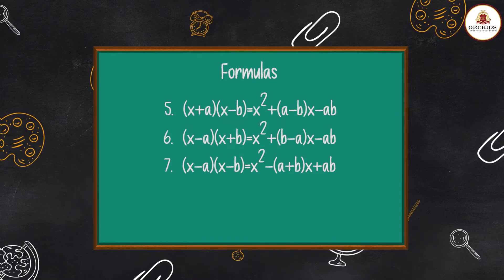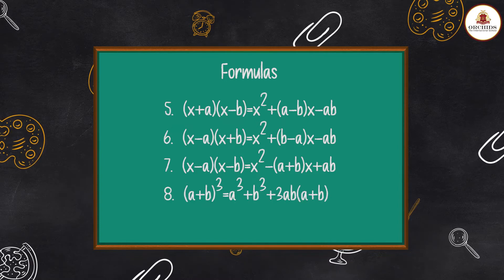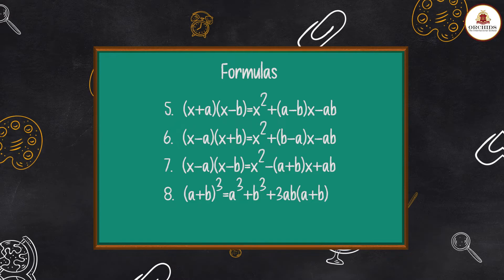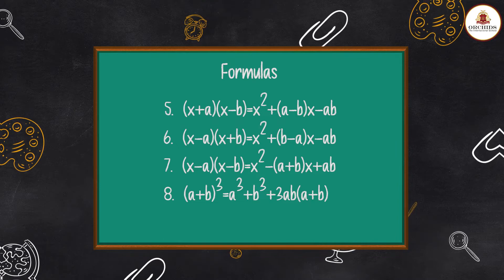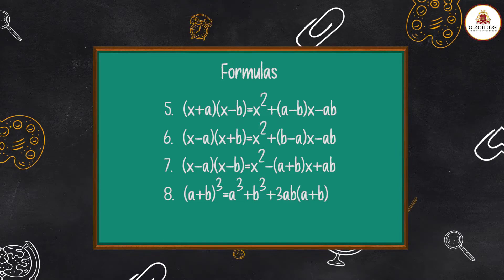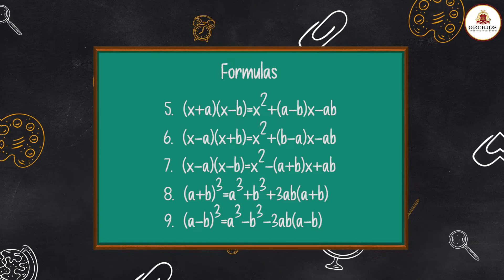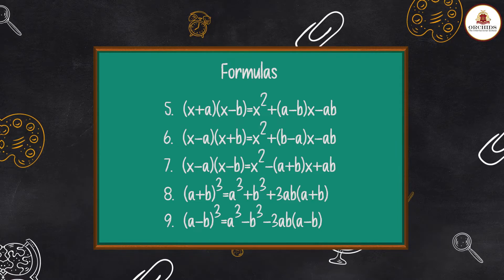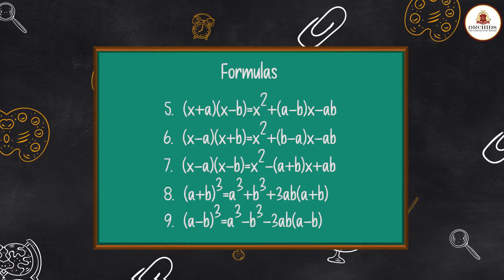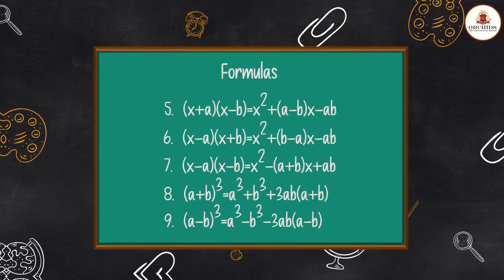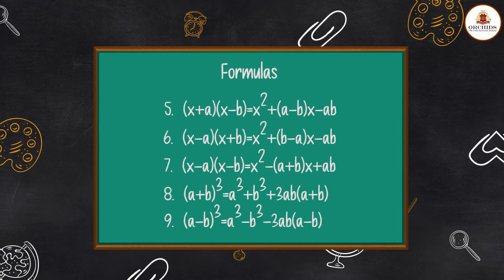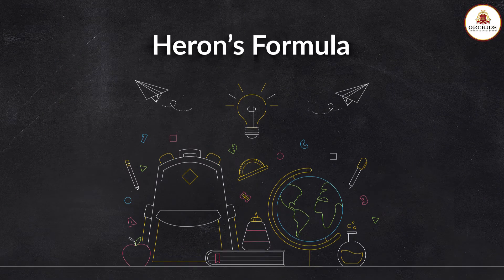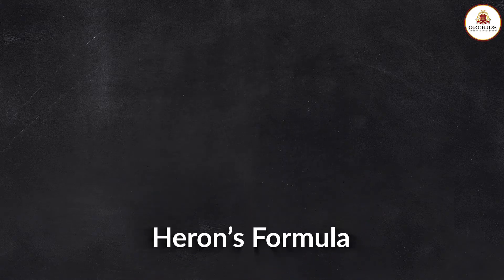8. (a + b)³ = a³ + b³ + 3ab(a + b)  9. (a − b)³ = a³ − b³ − 3ab(a − b). Are you all with me?